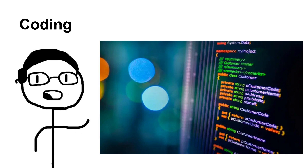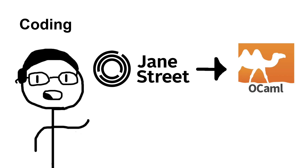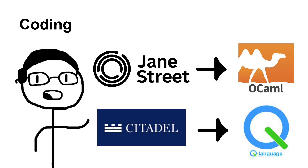On to our next major topic: coding. Although not all quant fields require a coding background, it's getting more and more common to need some coding experience to land these jobs. As programs and data dictate most of our trades, it's a valuable skill for every single quant. In terms of coding languages, there are a lot of languages to get into, such as the OCaml language used by Jane Street or the Q programming language used by Citadel.